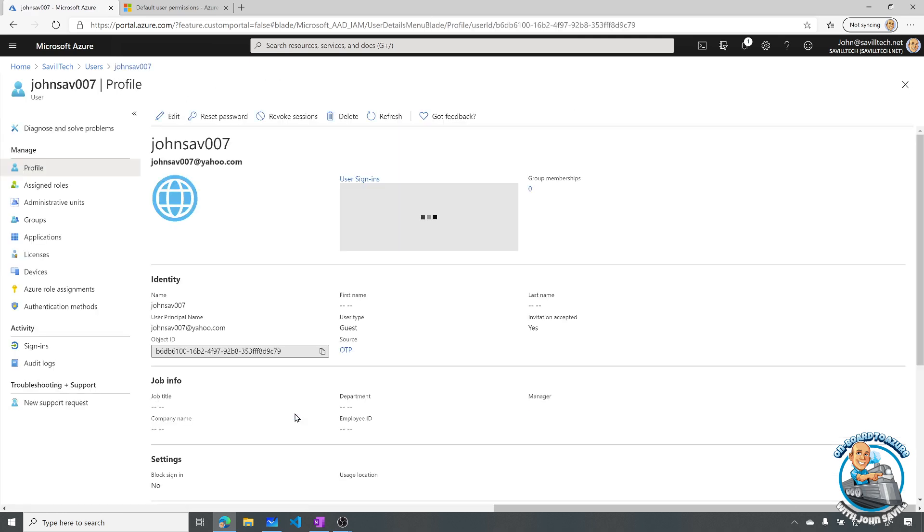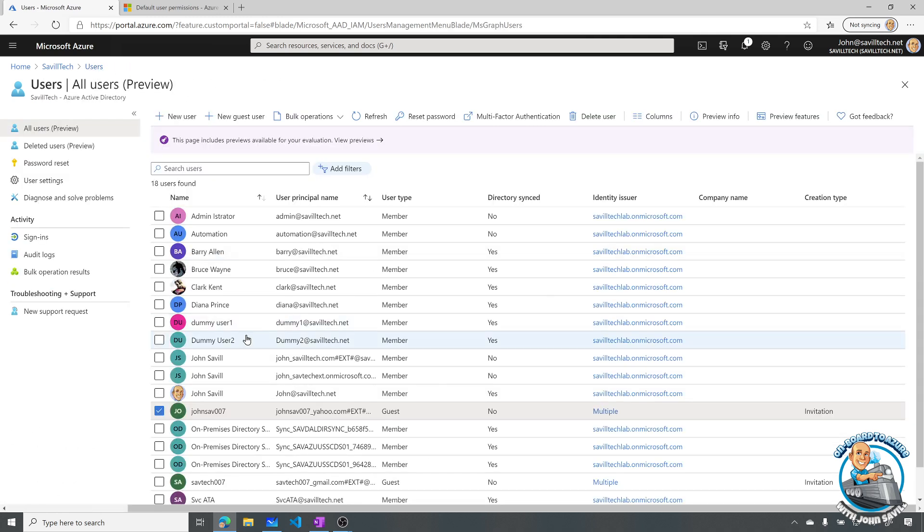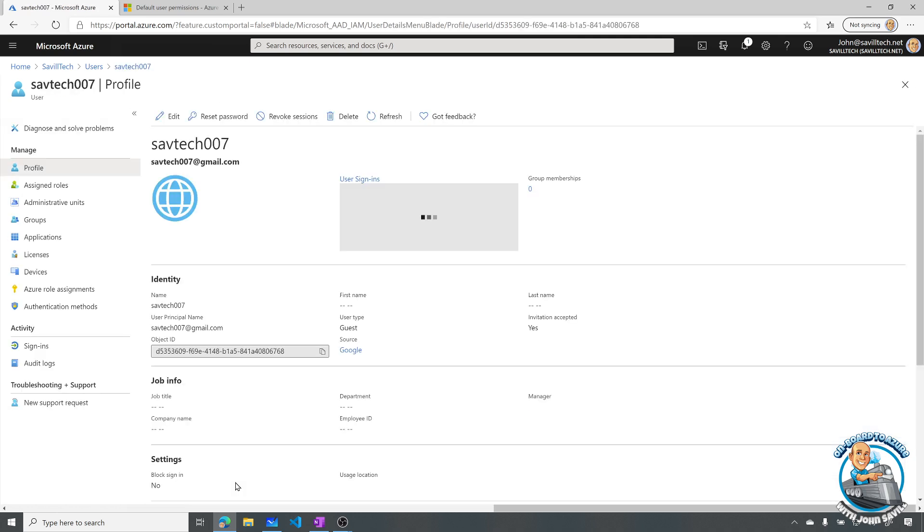If I go and look at that, well it will actually show me here the source. Well in this case it's OTP one time passcode. Because there is no kind of federation capability with Yahoo. However, if I went and looked for example at my Gmail account instead, we can see here well the source is Google. Right here it's showing us that source. We can also see the user type here is guest.